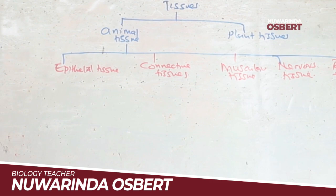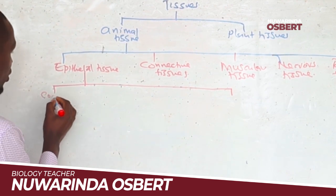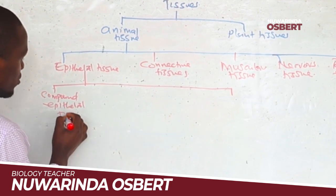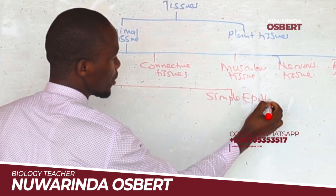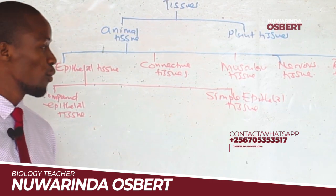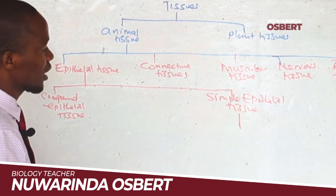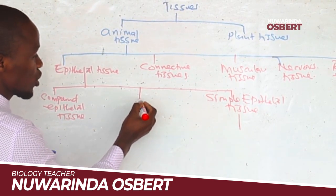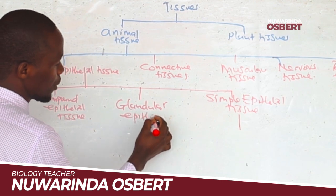We were also able to see that epithelial tissue is divided into two major categories: compound epithelial tissue and simple epithelial tissue. We also saw a third group, which is called glandular epithelial tissue.